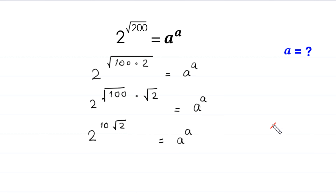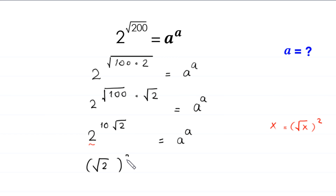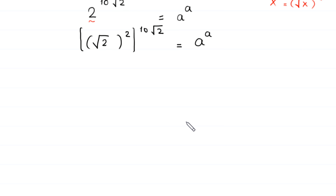Now, since x can be written as (√x)², we write this base 2 as (√2)² whole to the power 10 times root 2, which is equal to a to the power a. By using the property x to the power m, whole to the power n, is equal to x to the power m times n.